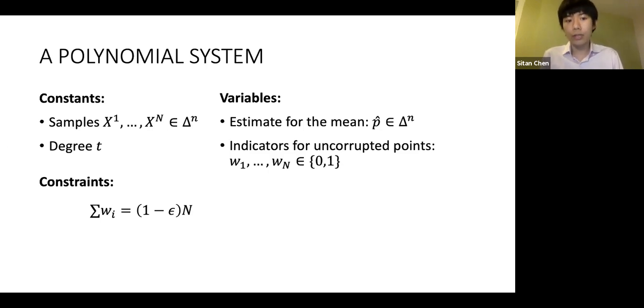Of course, I want the sum of the w_i's to be big, roughly the size of the true uncorrupted points in my data set. Of course, I want the w_i's to be Boolean.